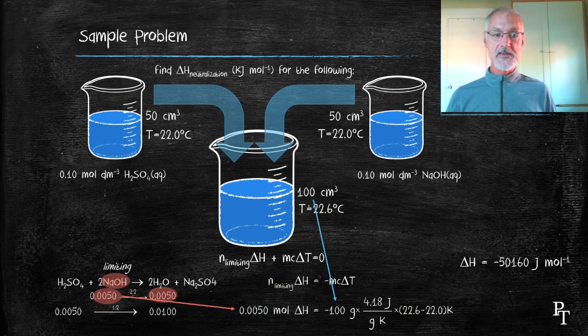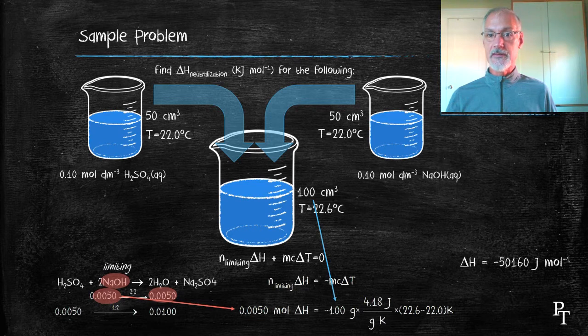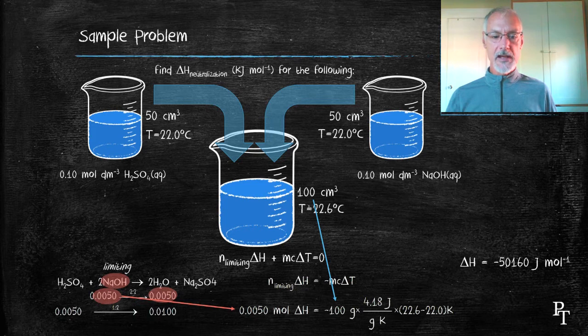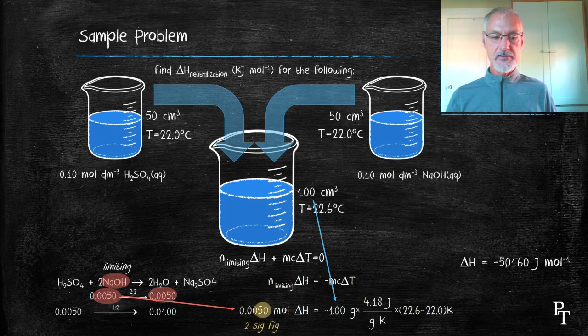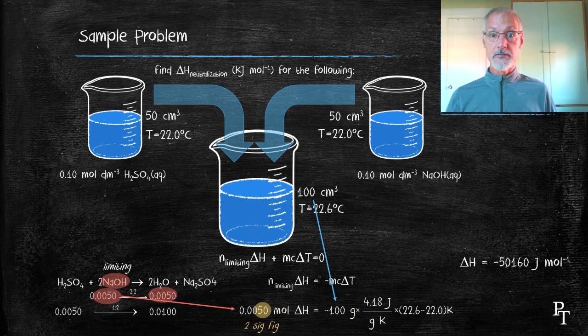Now, my final answer is supposed to be in kilojoules, so I'll need to divide that by a thousand and also express it with the appropriate number of significant digits. Well, let's take a look at what that would be. If I take a look at my moles of substance, it has two significant digits. My 100 grams has 3, 4.18 has 3.